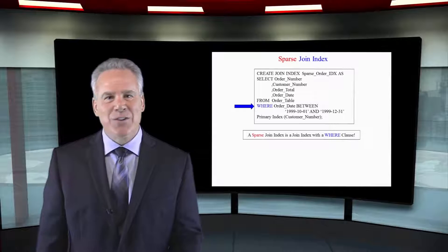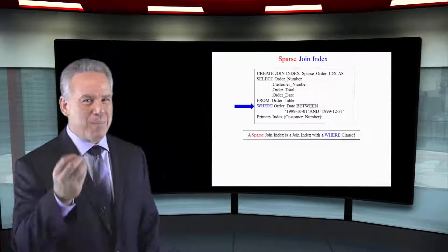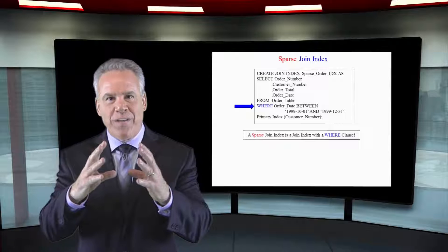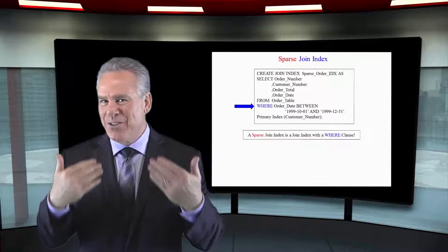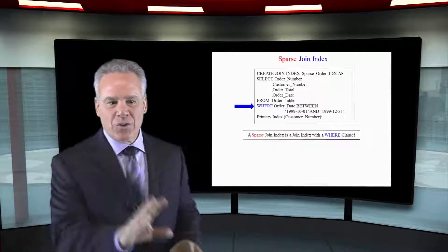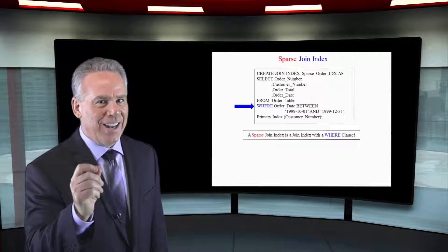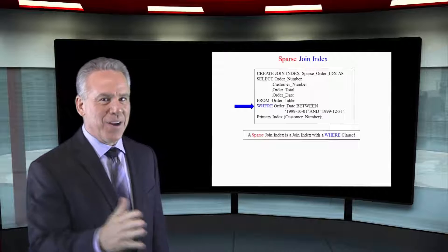With join indexes, there's good news and there's bad news. The good news is joins are going to run faster because they're already pre-joined, or certain queries can use the new primary index of the join index, and that's going to make things much faster.